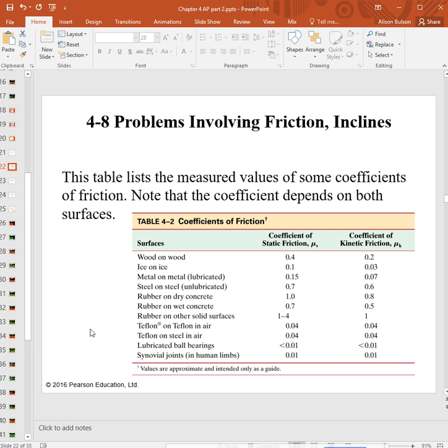Rubber on dry concrete, by contrast, has a coefficient of kinetic friction of 0.8. So lots of friction between those two surfaces, and then things vary from there.